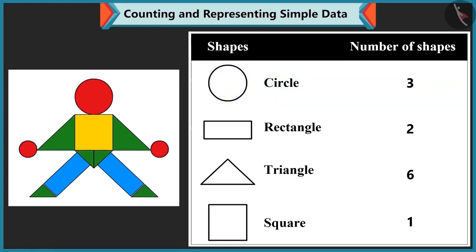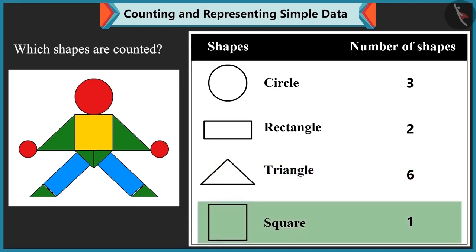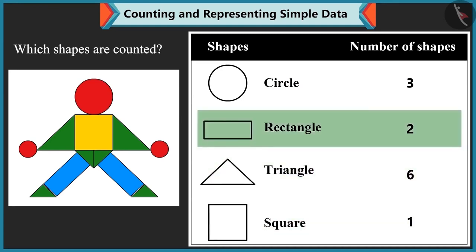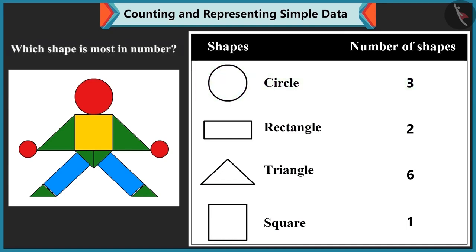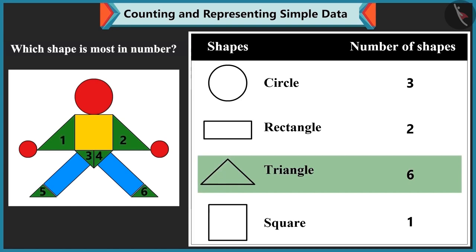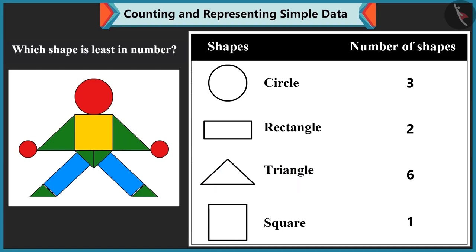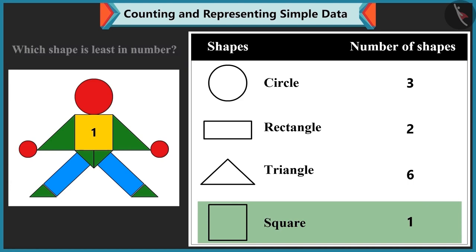Mummy asks Bubbly to name all the shapes counted: triangles, squares, rectangles, and circles. She then asks which shape is most in number. Bubbly answers there are 6 triangles, so triangles are most. There is only 1 square, so square is least in number.